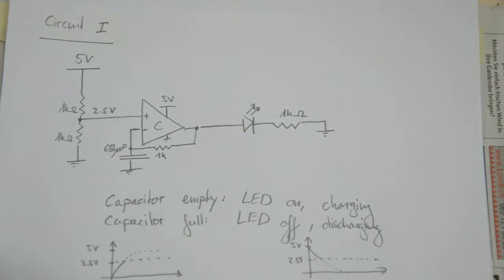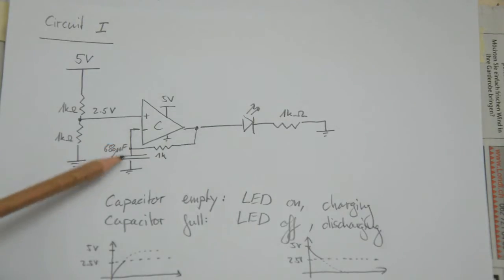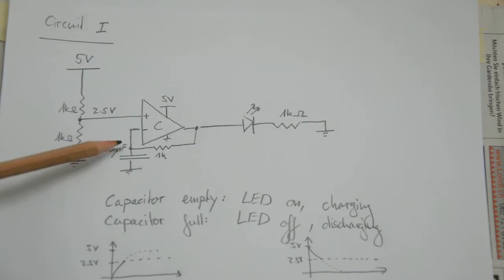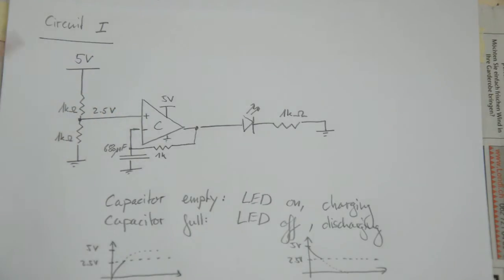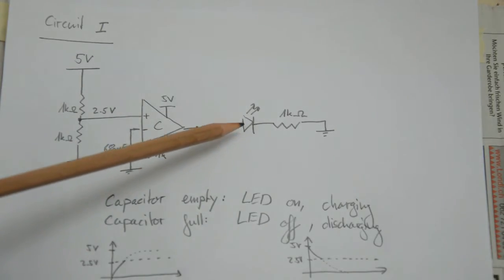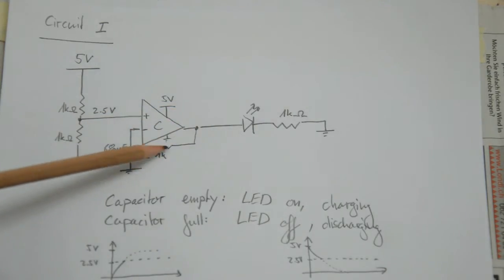The circuit operates in two stages. The first stage is when the capacitor is being charged, and the second stage is when the capacitor is being discharged, then it starts all over. In the first stage, assume the capacitor is initially discharged — that means zero volts across the capacitor and therefore zero volts at the inverting input. We're feeding 2.5 volts into the non-inverting input, so the comparator outputs a logic high — in this case 5 volts. With 5 volts at the output, the LED is on, and we're also charging the capacitor through this 1K feedback resistor.